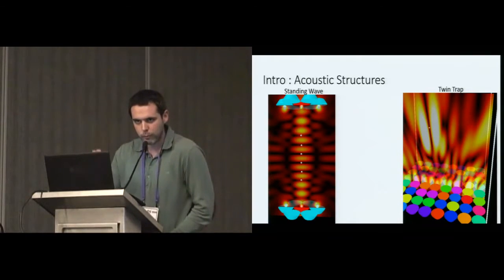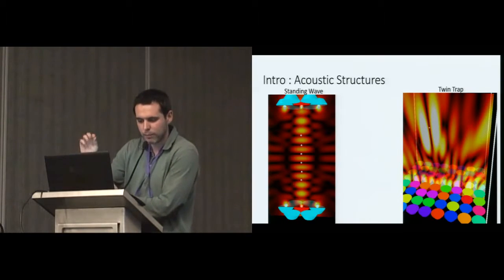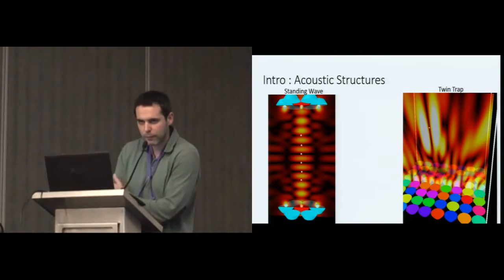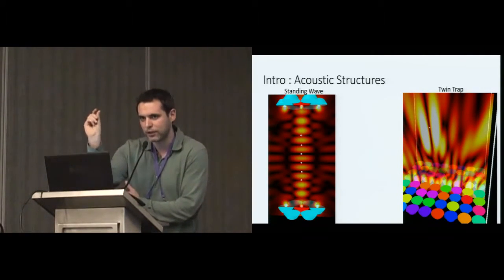This enables to create acoustic structures that support levitation. The two most simple, or the two most common structures that you can think is the standing wave and the twin trap. On the left, you have the standing wave. It's two opposite arrays, and you can put particles on each of the antinodes. The antinodes are the dark regions with low amplitude. And the twin trap is a structure to capture particles when you only have a single beam emitter. And basically, it looks like two fingers that are trapped in the particle.